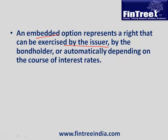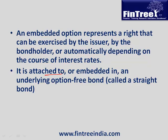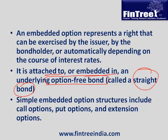A fixed income security with an embedded option represents a right that can be exercised by the issuer, by the bondholder, or automatically depending on the course of interest rates. It is attached to, or embedded in, an underlying option-free bond — typically called a straight bond. Simple embedded option structures include call options, put options, and extension options.